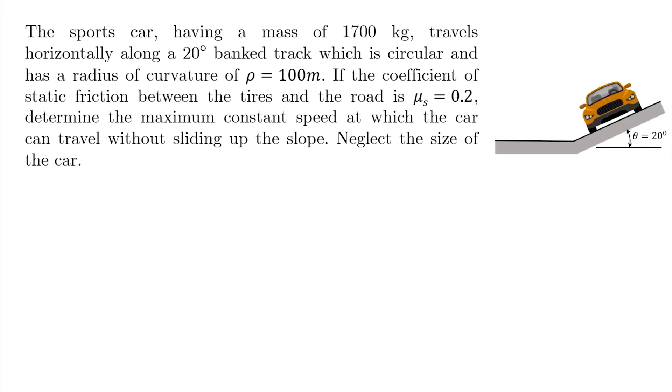The sports car having a mass of 1700 kilograms travels horizontally along a 20 degree banked track which is circular and has a radius of curvature of rho equals 100 meters. If the coefficient of static friction between the tires and the road is mu s equals 0.2, determine the maximum constant speed at which the car can travel without sliding up the slope. Neglect the size of the car.